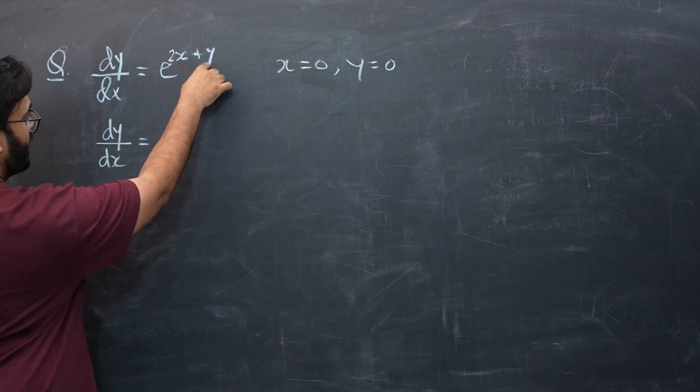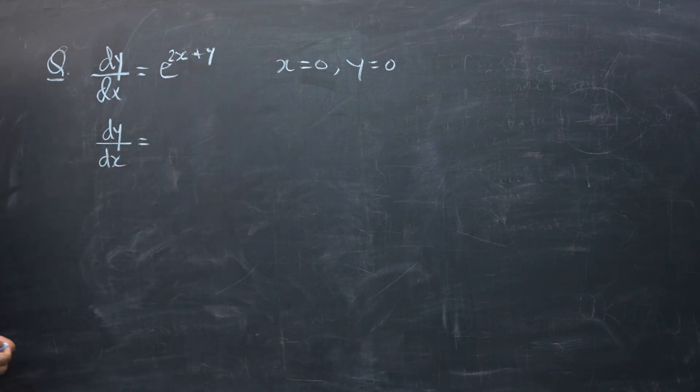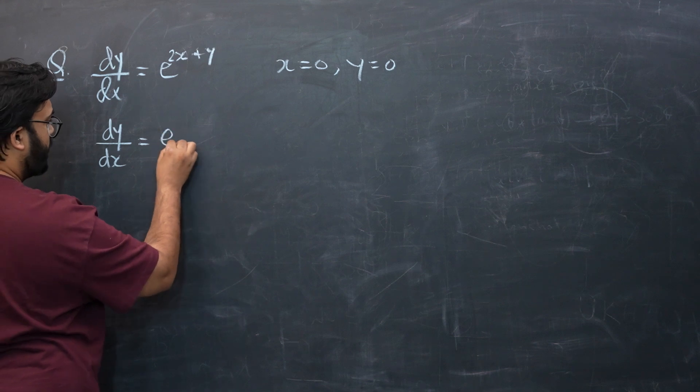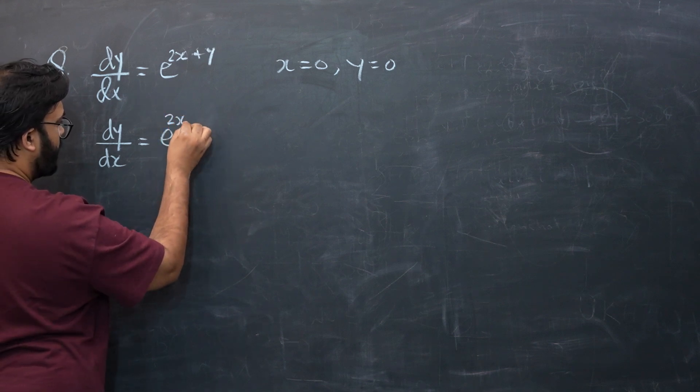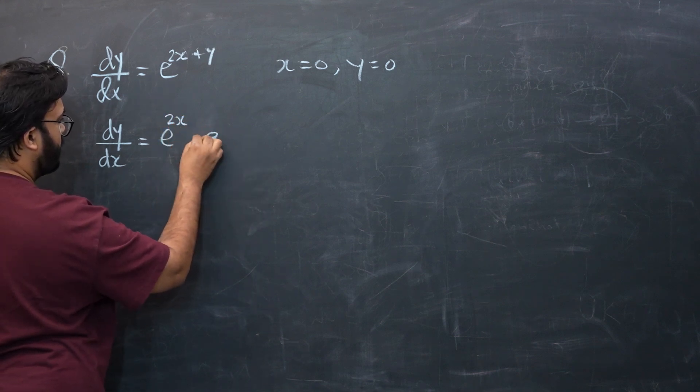For this one, the trick was in indices that we know that powers are added when same bases are being multiplied. So you can split this as a base of e while those bases are being multiplied.